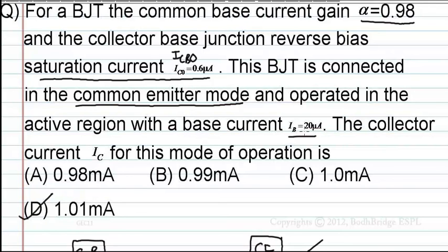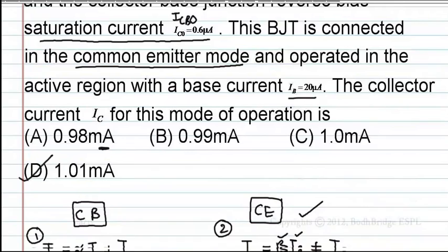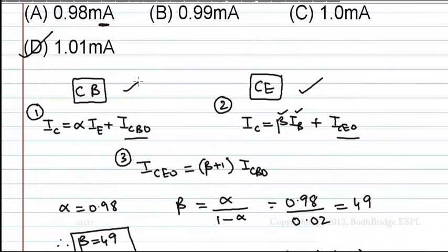D is the correct option. Some people, what they do is collector current IC equals βIB they will do. Beta is 49 they will calculate, 49 times 20 is they will write some 0.98 milliamperes. This is the first option. Always see, whenever reverse saturation currents are given, only these three formulas apply. This one, this one and this one. And do it carefully.